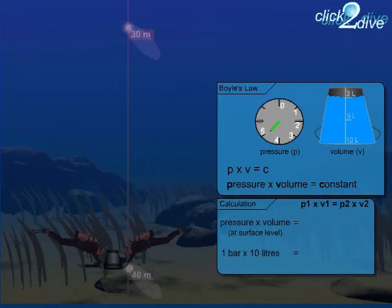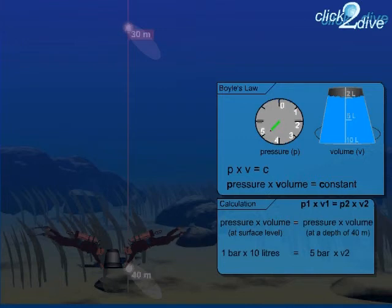Now, on the other side of the equation, you fill in the pressure of 5 bar at a depth of 40 metres. Now, all you have to do is bring the pressure P2 to the left side by dividing both sides of the equation by P2, in this case 5 bar.